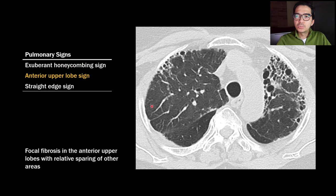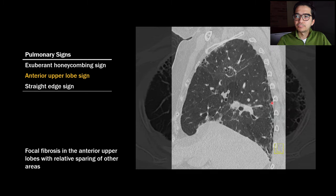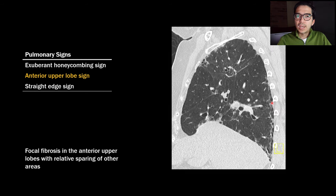The anterior upper lobe sign is when you have focal fibrosis in the anterior upper lobes with relative sparing of the other portions of the upper lobes. It's often helpful to look at the sagittal images, where you'll see basilar and peripheral fibrosis in the lower lobes as well as anterior subpleural fibrosis in the upper lobes.